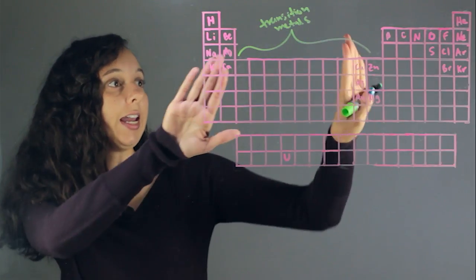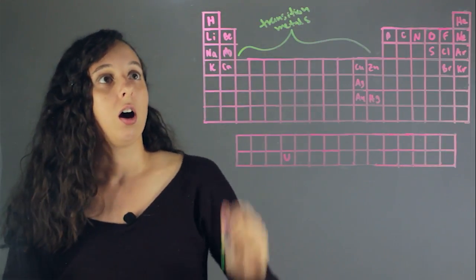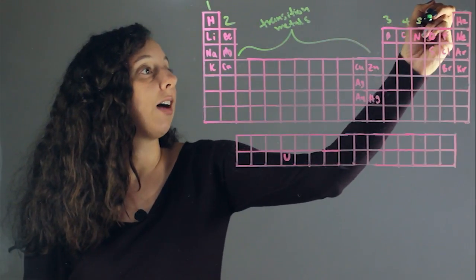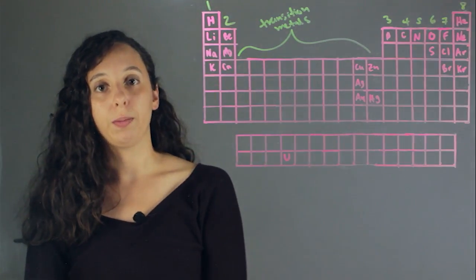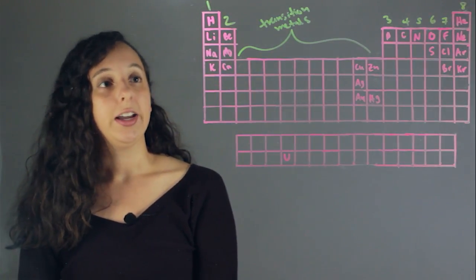And the eight columns or groups not in the transition metals are labeled groups one, two, three, four, five, six, seven, and eight. And these groups determine how many valence electrons each atom has in its last shell.